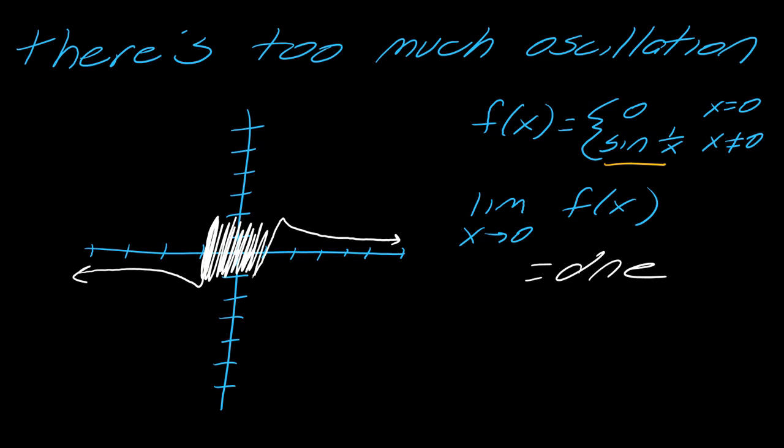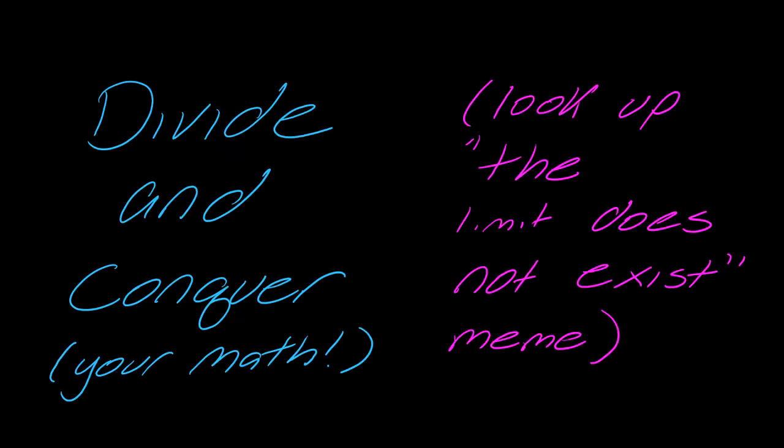Those are the three standard cases where a limit does not exist — very specific places where it won't exist. You want to be really careful to claim that a limit does not exist; you have to be able to tie it to one of these cases. Otherwise, you probably want to err on the side of it does exist. I have lots of other videos where I break down how to evaluate limits that do exist, so be sure to check those out. Thanks for watching.